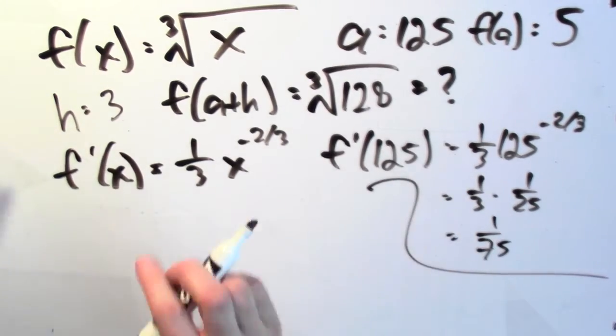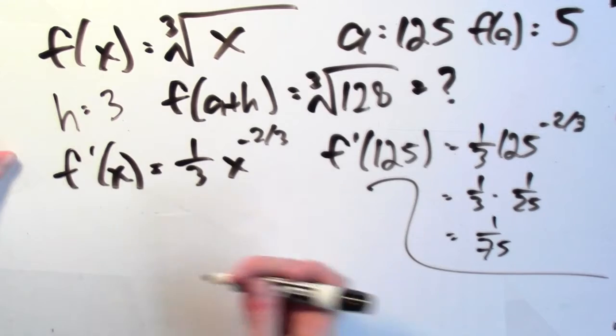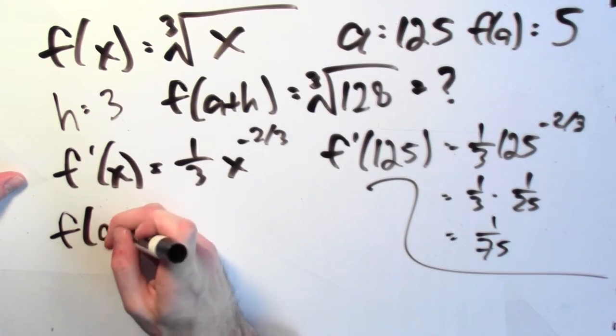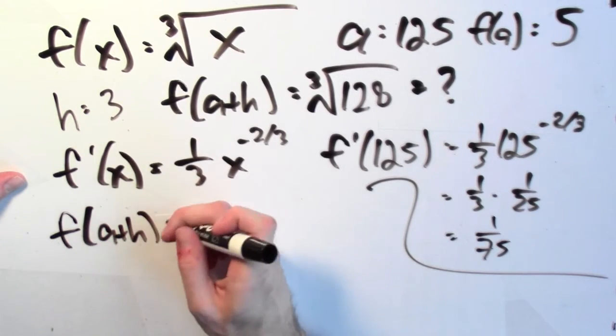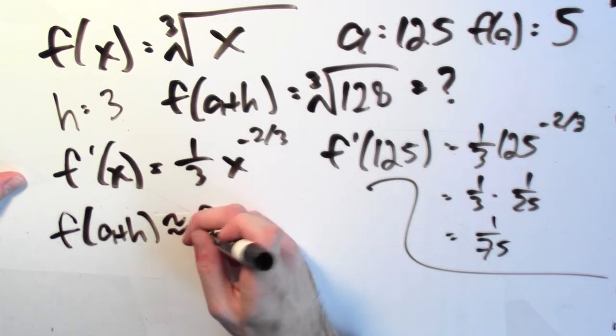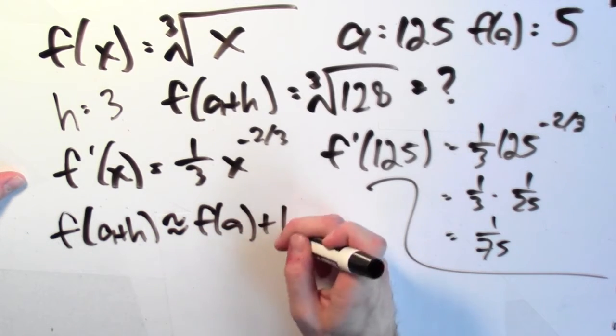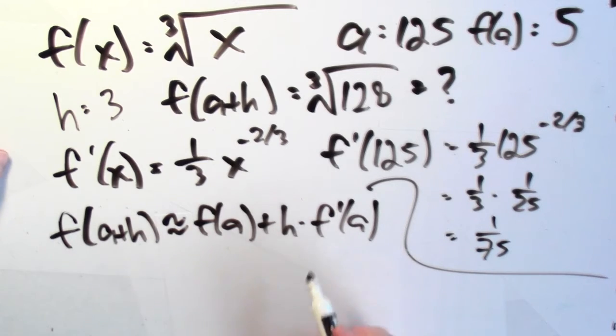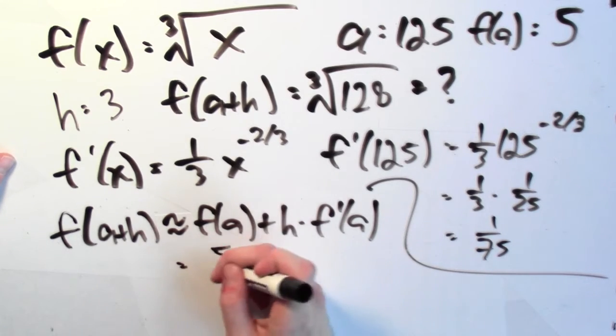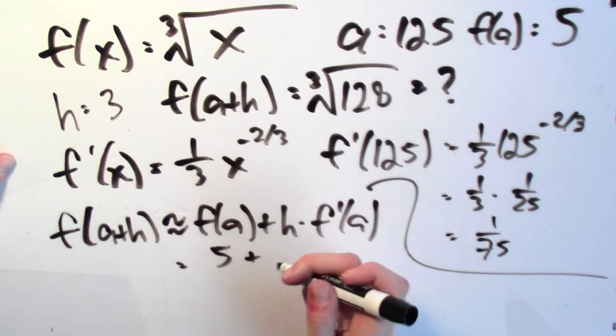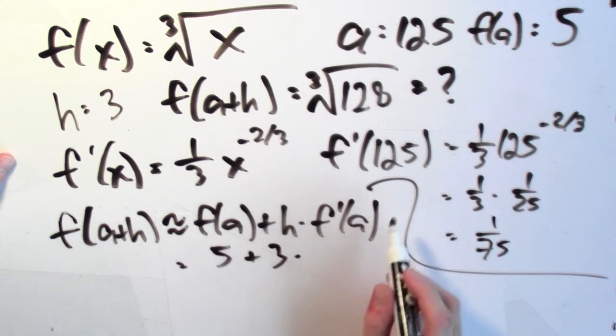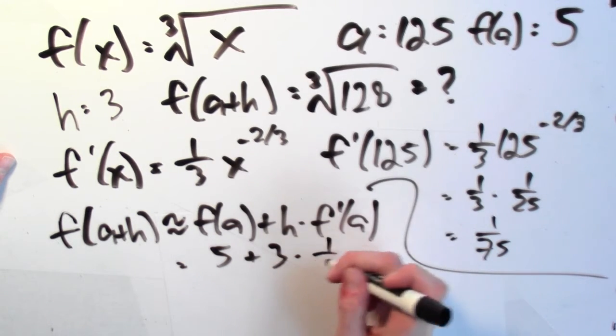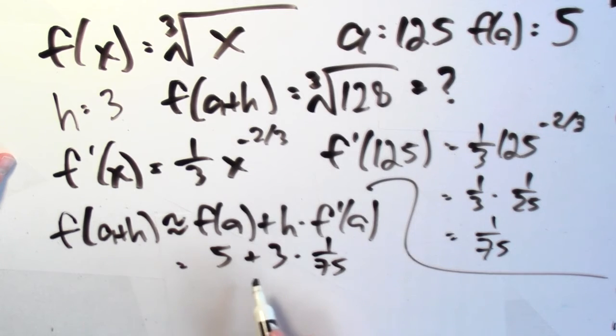Now, how does that help? Well, remember the other formula for this linear approximation game, that f(a+h), which is what I'm trying to compute, should be approximately f(a) plus h times f'(a). And I know what all of these quantities are now. f(a) is 5, h is 3, and f'(a) is 1/75. And 5 plus 3 times 1/75, that's 5.04.